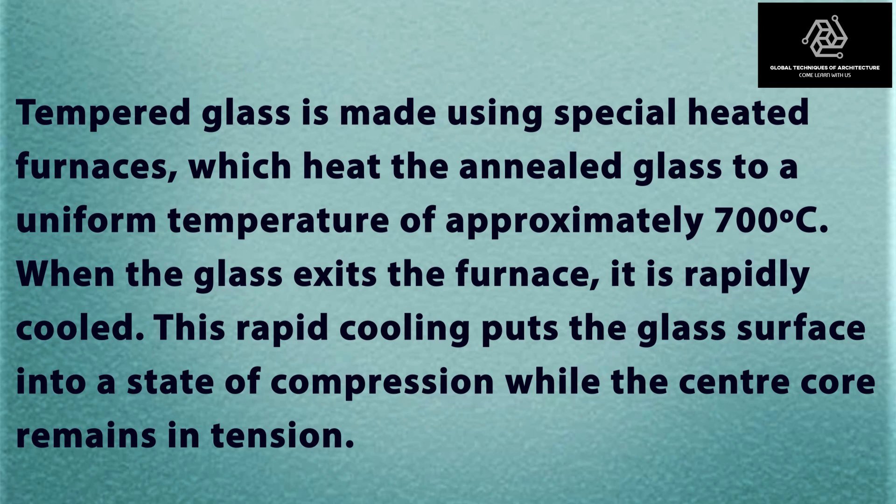So how do we make FT glass? Up until oscillating into the furnace, the process remains the same as HS glass. HS glass is allowed to cool at room temperature, whereas in FT glass, the annealed glass is made to pass and oscillate into the furnace at a temperature of 700 degrees Celsius and above. The moment it exits the furnace, we cool it suddenly.